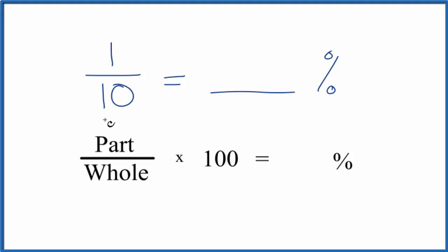And to do that, we're going to take the part, that's the 1, and divide by the whole thing. That's the 10. And then we multiply by 100. That'll give us our percent.